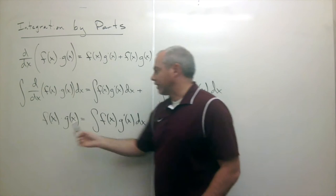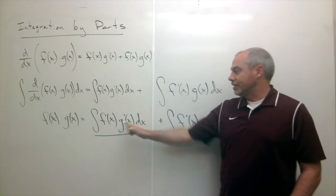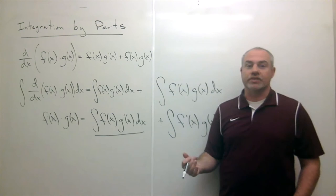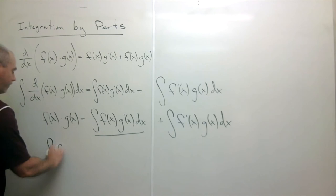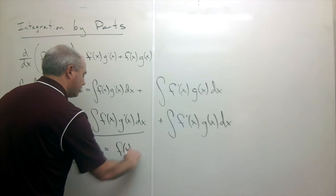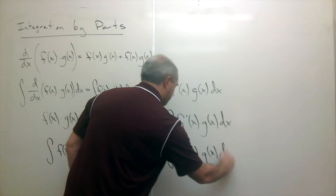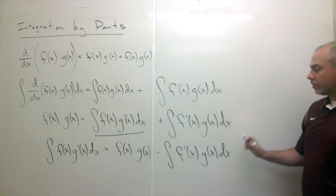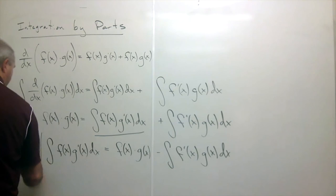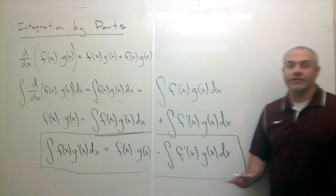Now I want to solve for this integral by rearranging — just using algebra. What I get is that the integral of f(x) times g'(x) dx equals f(x) times g(x) minus the integral of f'(x) times g(x) dx. This equation at the bottom is the formula that gives us our technique called integration by parts.